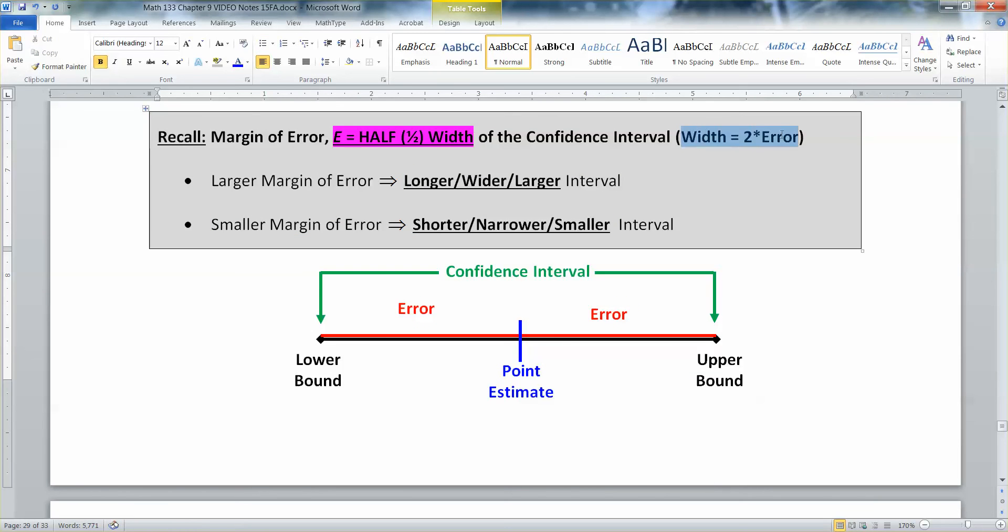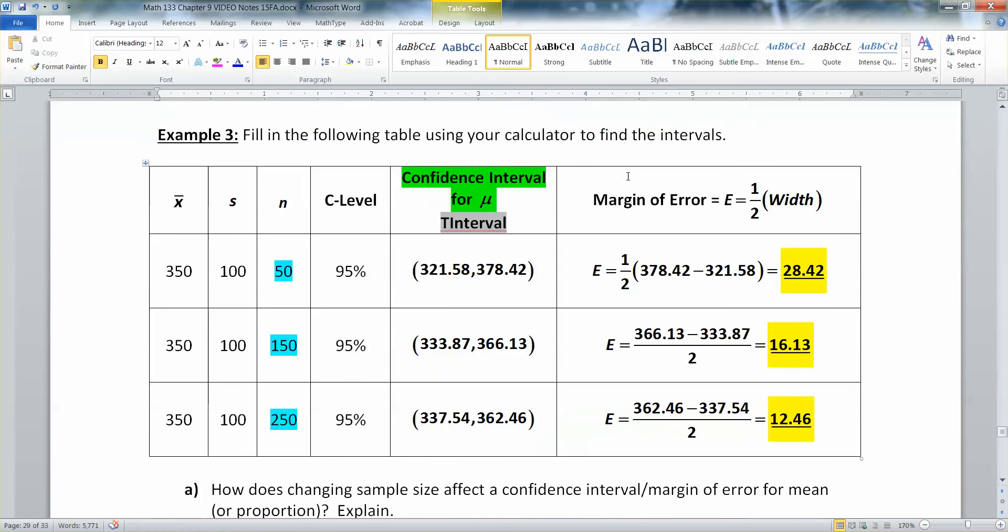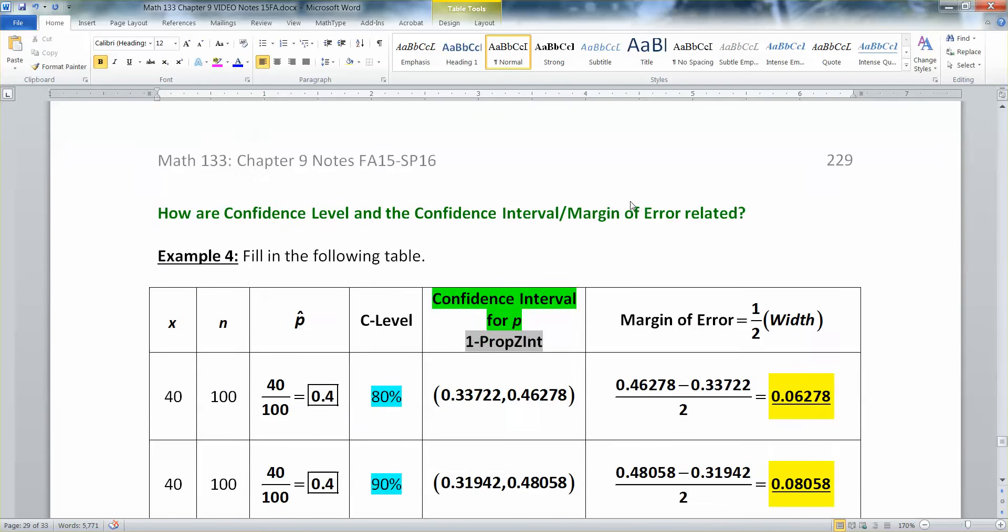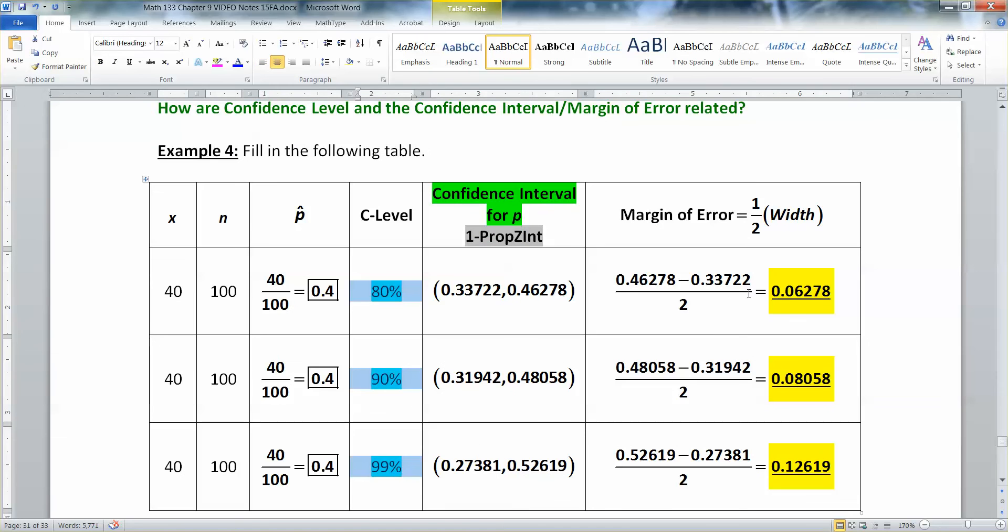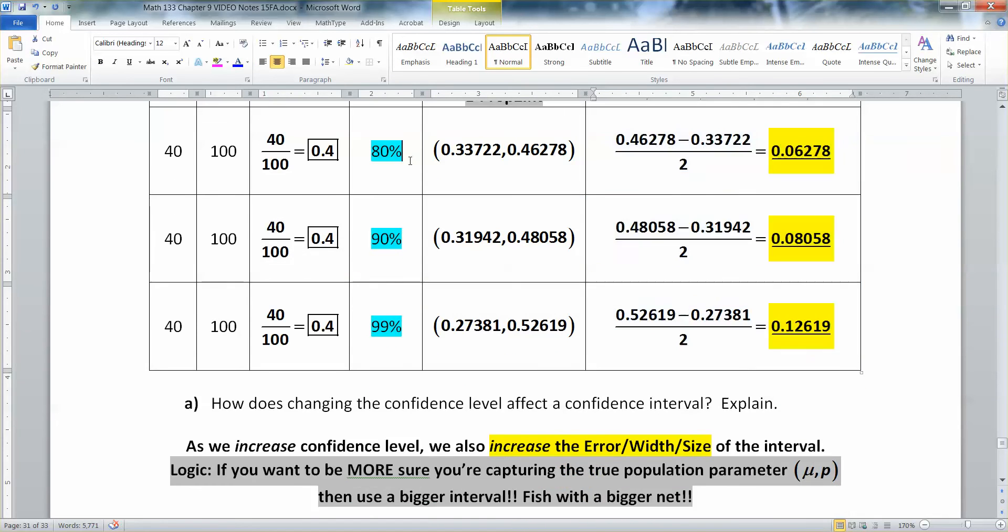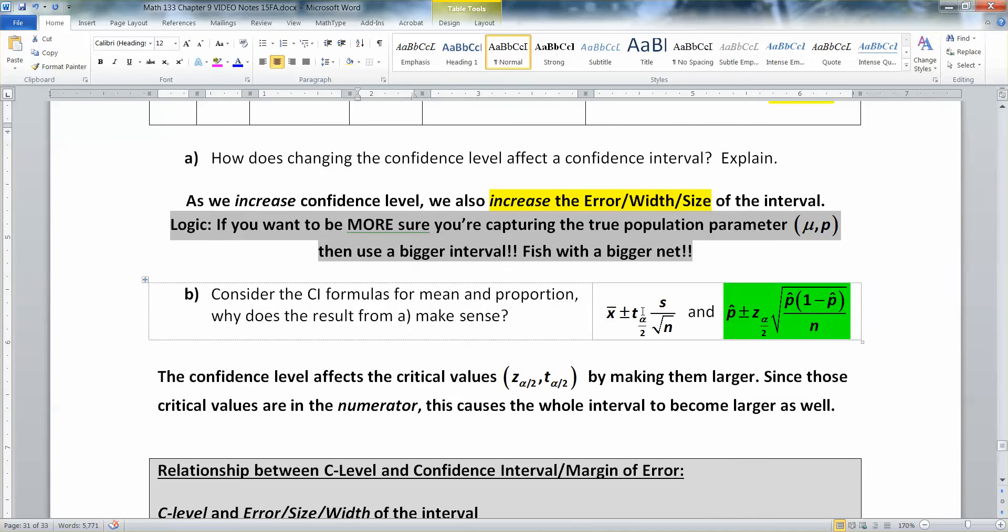That's back a couple pages. So, if error is half the width, the width is twice the error, and that means that they're kind of working together, right? And so, now we also know they're working together with your confidence level. Whatever your confidence level is, if you raise it, it's going to cause it to be a larger and larger interval, right? Because when you raise this, you're affecting your critical value. Your critical value is in the numerator, and that's going to cause the whole interval to get bigger. In other words, if you want to be more certain you know where the parameter is, you make a bigger interval, you'll catch that parameter.